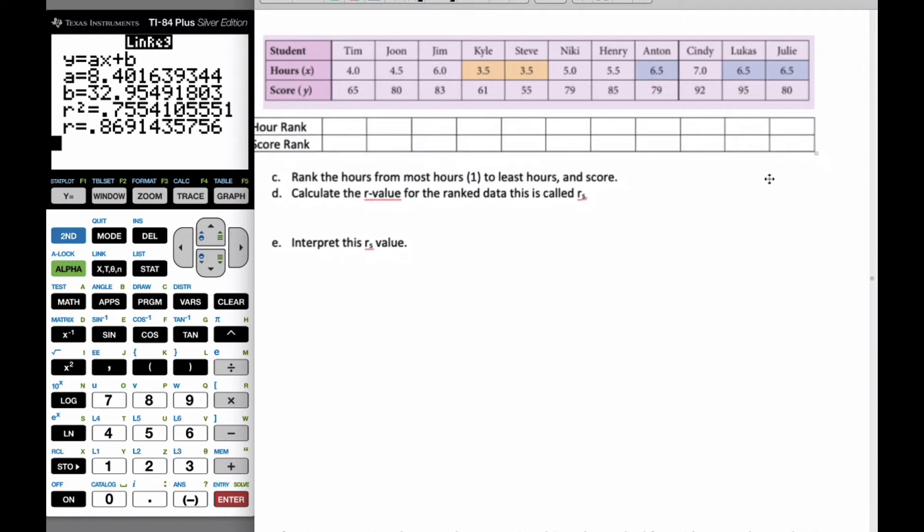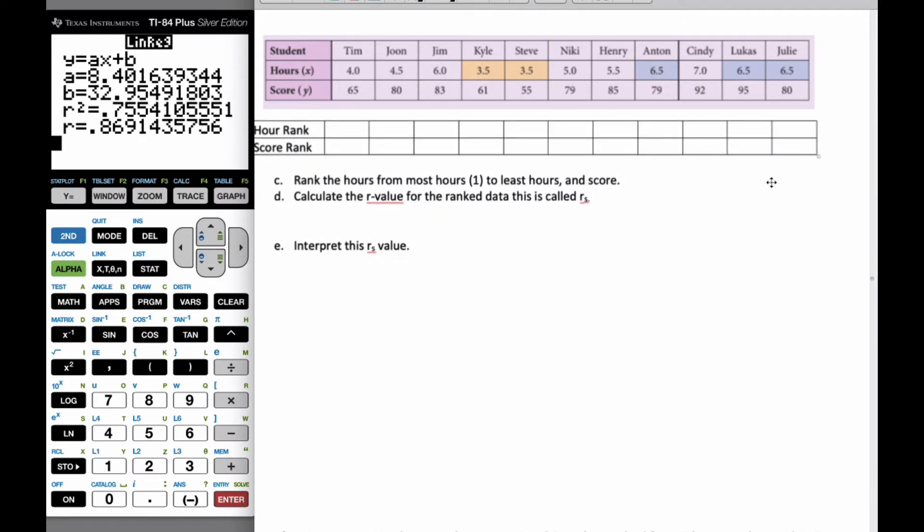I'm going to line these up so I can more simply transfer them back and forth. Cindy is number one, she studied the most. Then all these three people studied the same amount, so they should be 2, 3, and 4. If I take 2 plus 3 plus 4 and divide it by 3, I have to find the average because they all get equal amount. They're going to be 3, 3, and 3. The next person is Jim, who studied for 6 hours, so he is going to be 5.